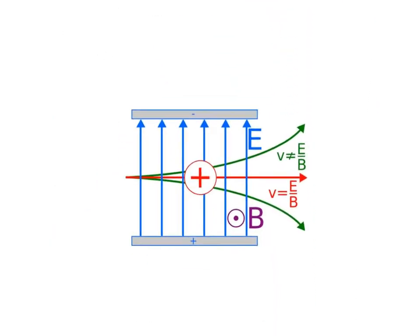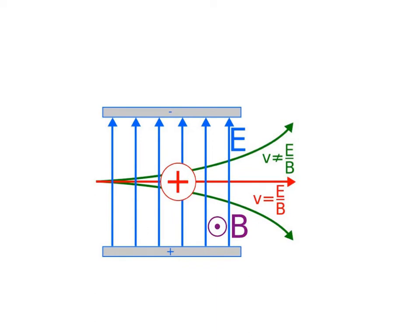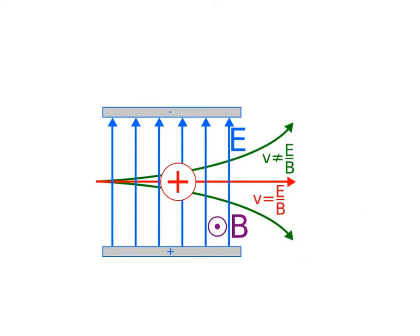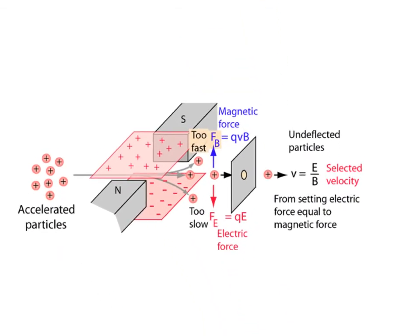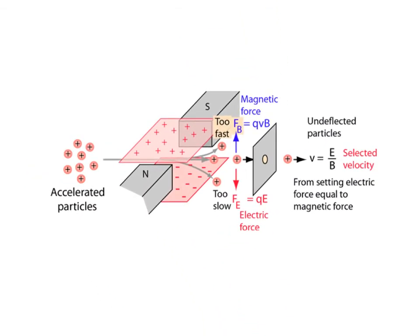Just some other images to show you this idea here. Again, you can pause the video and use your left hand to check this. A positive charge moving to the right, field going up. And as we can see, when the velocity is just right, is equal to E divided by B, then it continues off straight, and it would be detected over here. Otherwise, it's going to curve off if that's not equal. There's also a nice image here, which again, you can pause and read it in more detail if you'd like to.